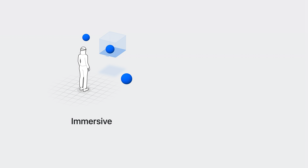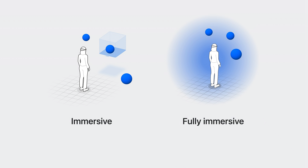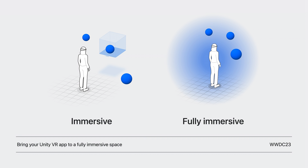There are two main approaches for creating immersive experiences on this platform with Unity. You can create experiences which mix your content with real-world objects using pass-through, either as an immersive experience or in the shared space alongside other apps. You can also bring a fully immersive Unity experience to the platform. If you're interested in this approach, I recommend you check out Bring Your Unity VR App to a Fully Immersive Space.